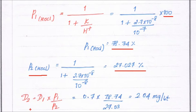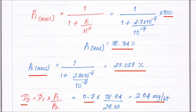Using the formula D1 × P1 = D2 × P2, we can rearrange to D2 = D1 × P1 / P2. Substituting: D1 = 0.7, P1 = 78.74, P2 = 27.027. Calculating gives D2 = 2.04 milligrams per liter. This is the required chlorine dosage at pH 8.